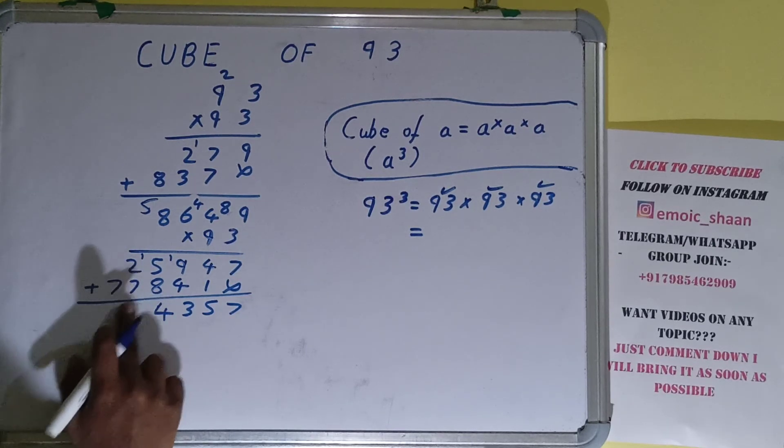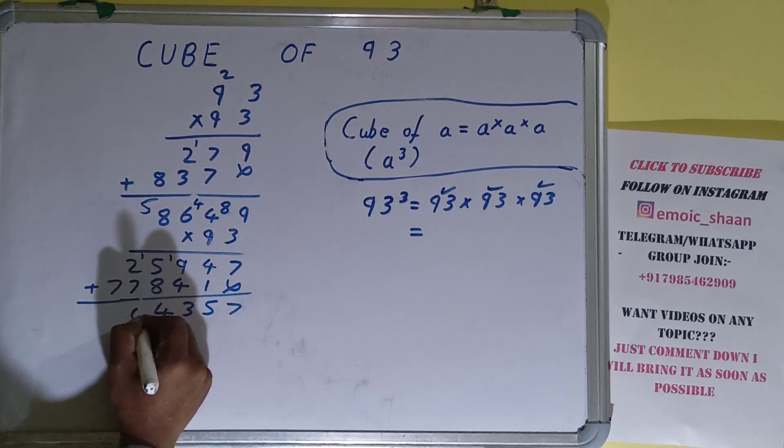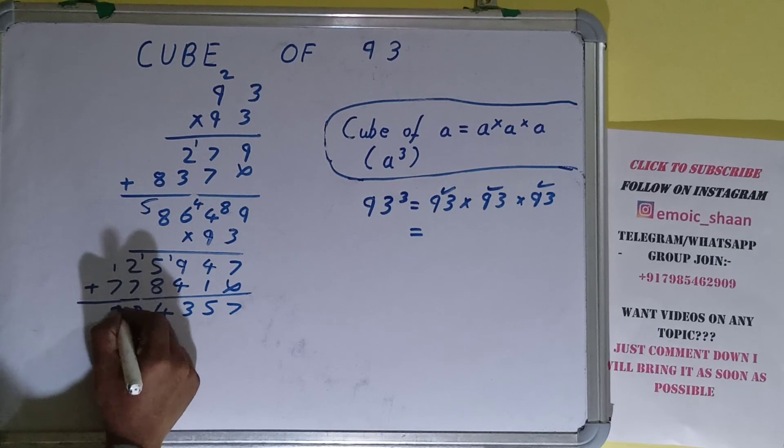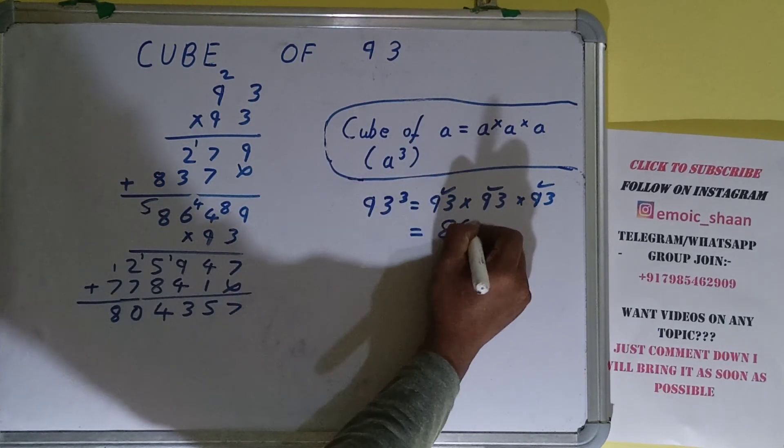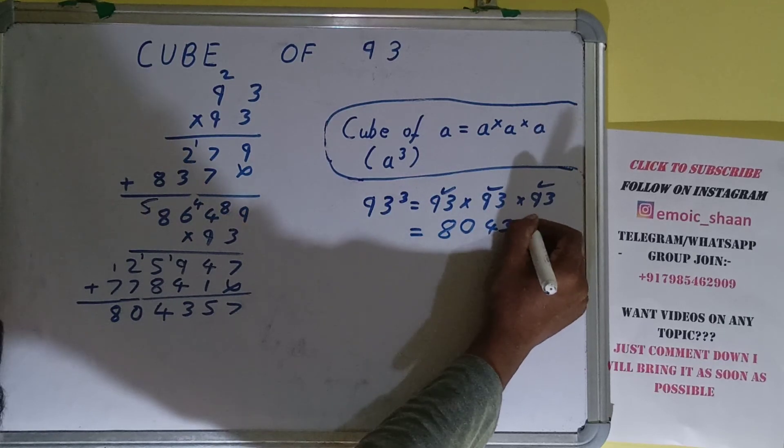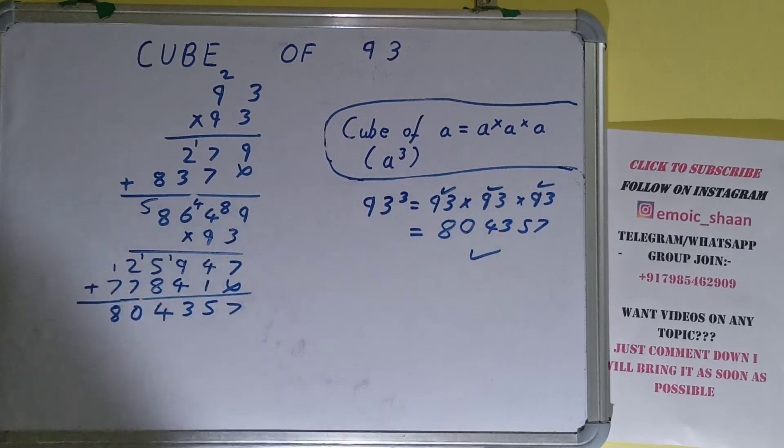No no, this will be 10, so if one carry was there this will be 0 and this will be 8. So your answer will be 804357. That will be the cube of the number 93.